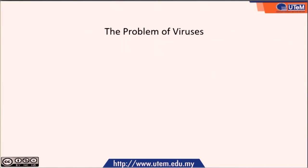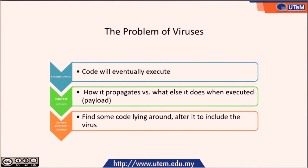What is the problem of viruses? Viruses can be opportunistic, which means they can execute with a separate notion — how they propagate versus what else they do when executed, which is the payload that can harm the target. Finally, the general infection strategy is that a virus can find some code lying around and alter it to include the virus.